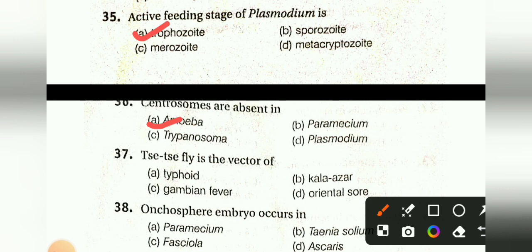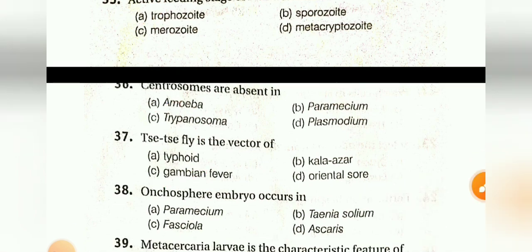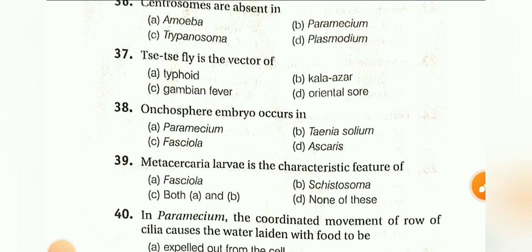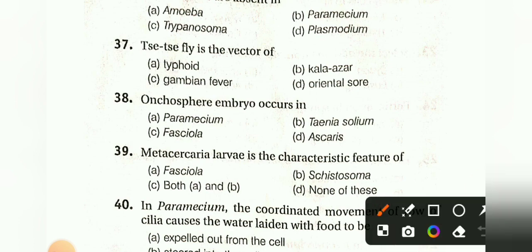Onchosphere embryo occurs in: Paramecium, Taenia solium, Fasciola hepatica, or Ascaris. The answer is Taenia solium.